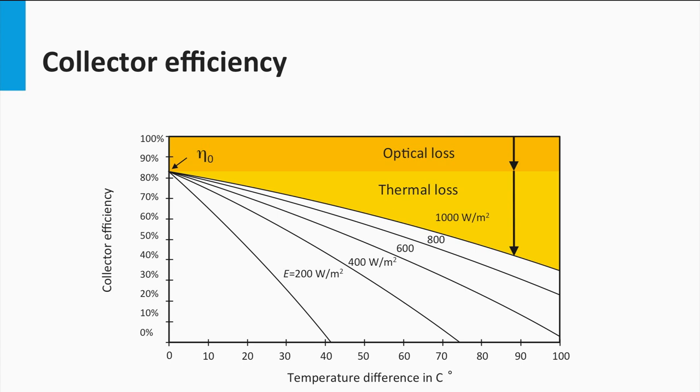The efficiency of the collector depends mainly on two factors: the extent to which the sunlight is converted into heat by the absorber, and the heat losses to the surroundings. It will therefore depend on the weather conditions and the characteristics of the collector itself.